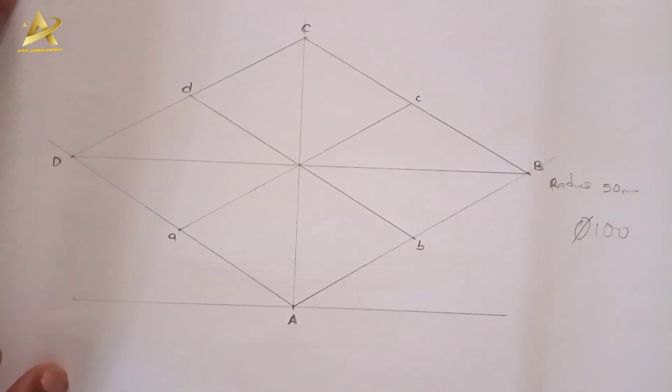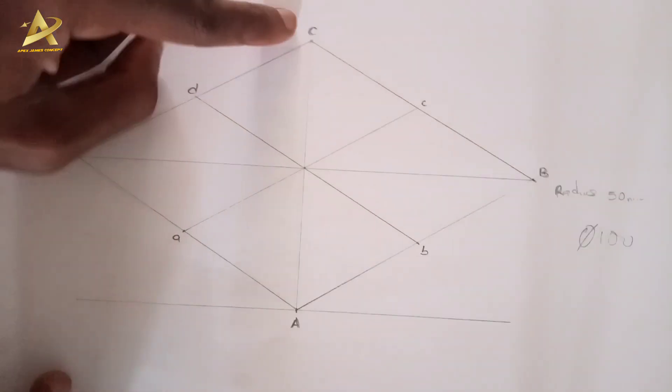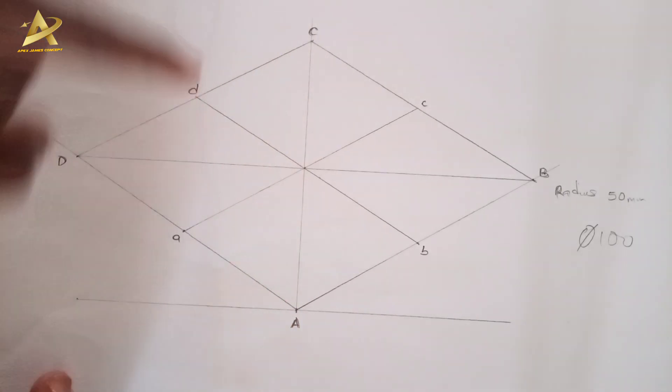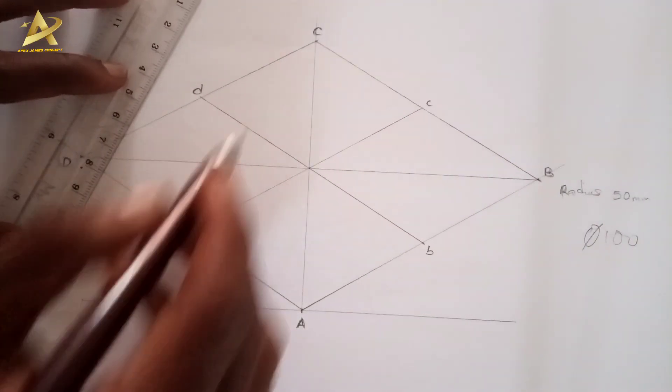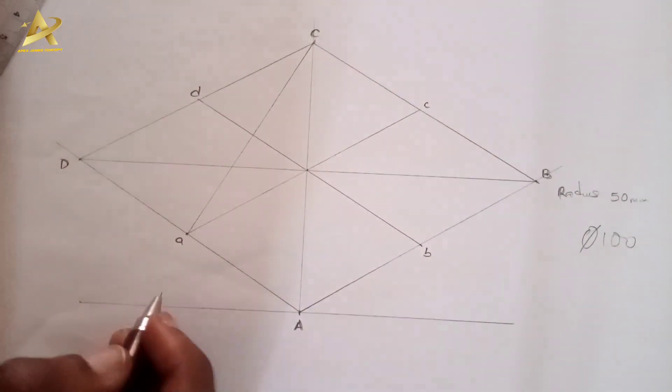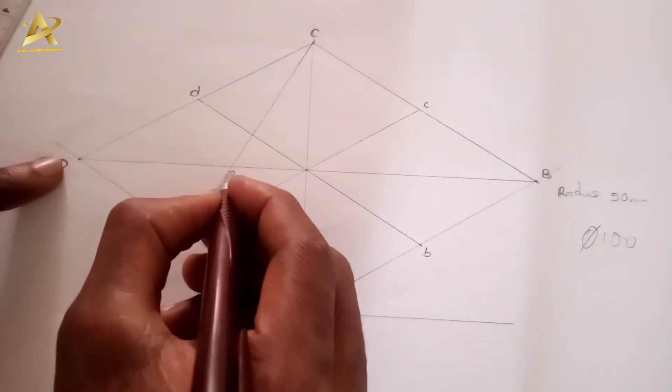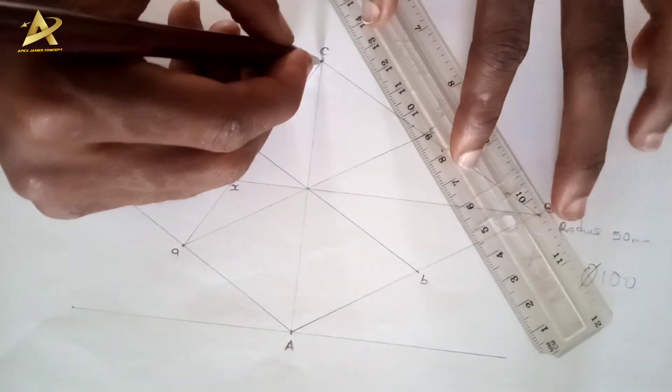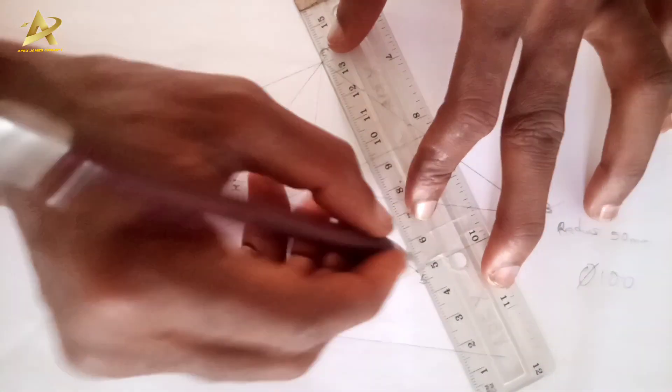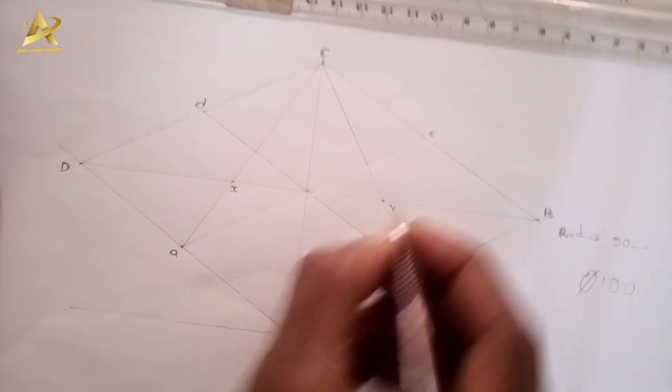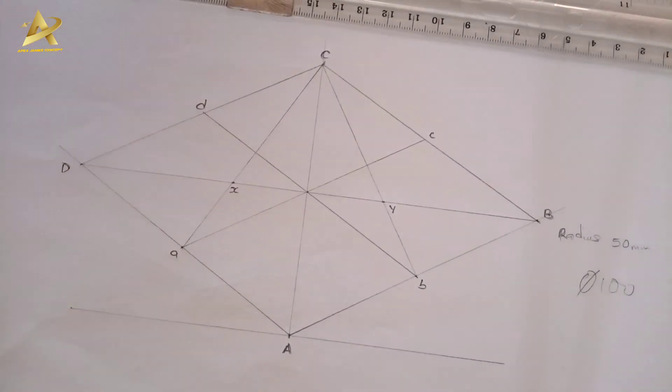I will draw a line AC. Anywhere AC cuts your longer diagonal, I will name that place X. I'll draw a line from capital B to small letter c. Where it cuts the diagonal I will name this point Y.